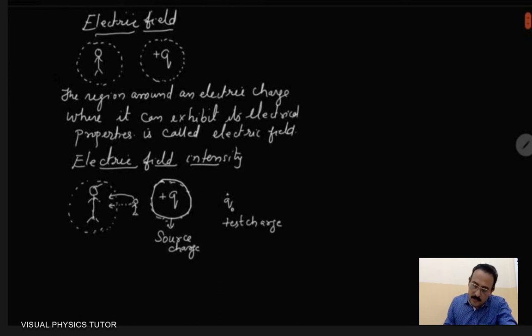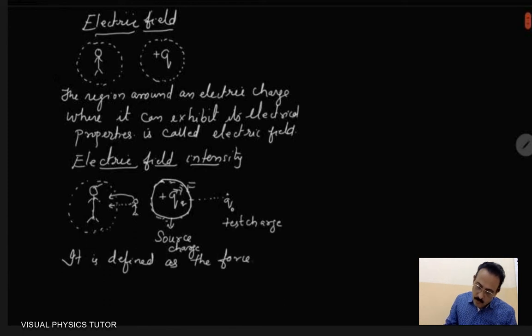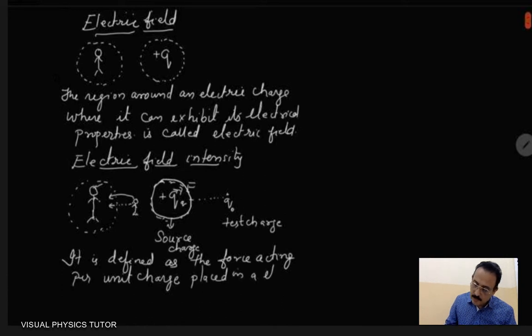Now just try to analyze what would happen if this test charge is somehow brought into this electric field inside the region of this electric charge. So definitely if this is brought over here, this will exert a force on the test charge. So we can say electric field intensity is defined as the force acting per unit charge placed in an electric field.